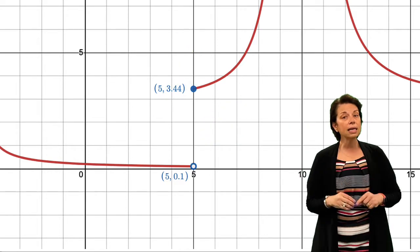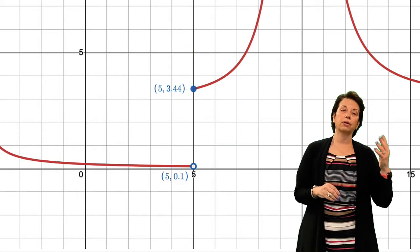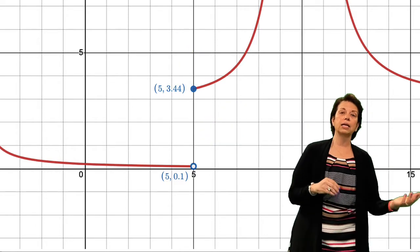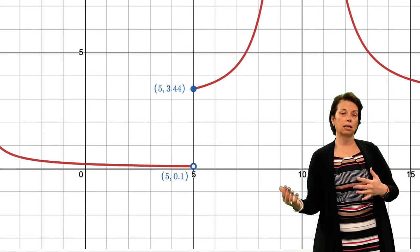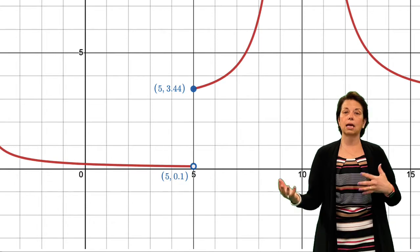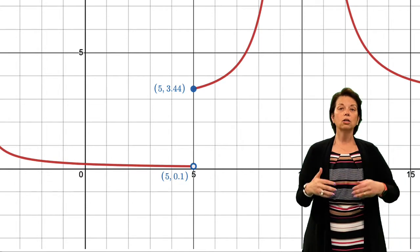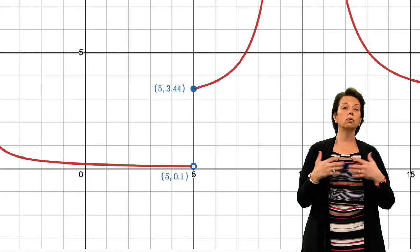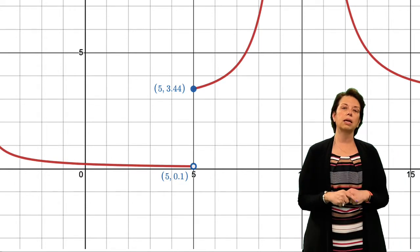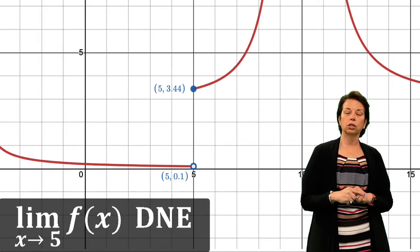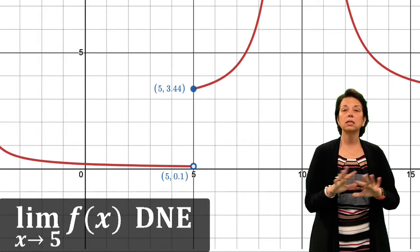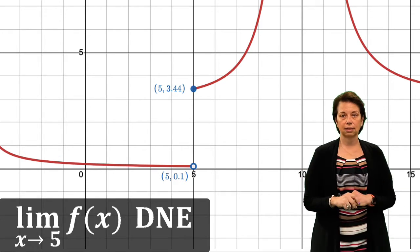Once again, I have a limit on the left-hand side and a limit on the right-hand side that are not the same. As a result, we would say the limit as x approaches 5 does not exist.